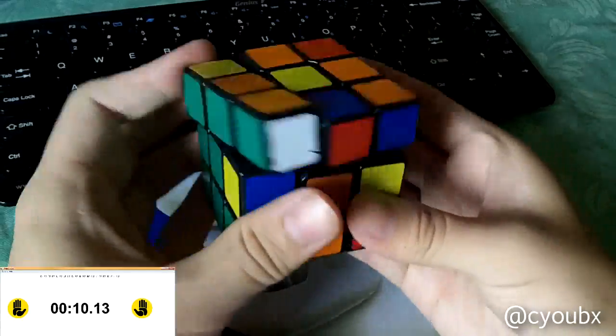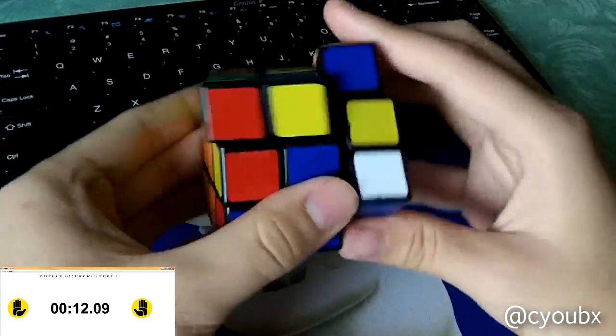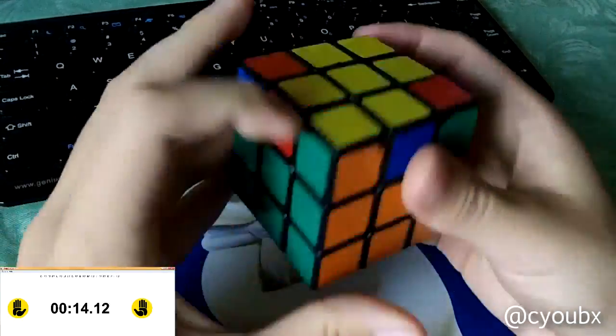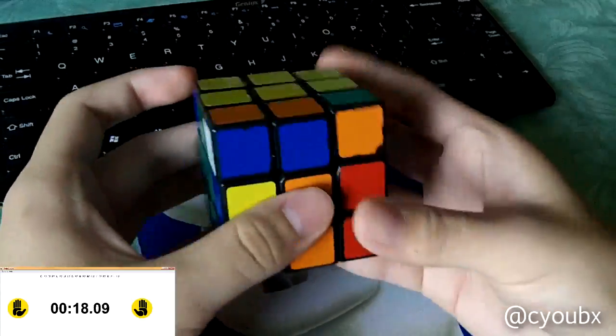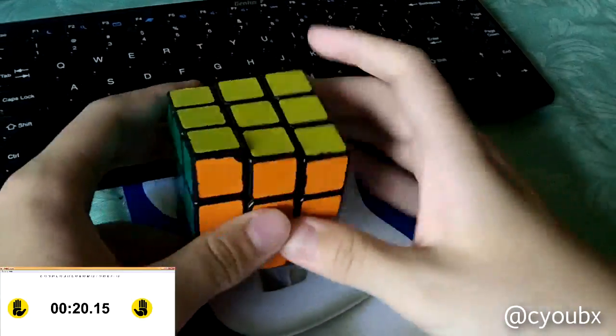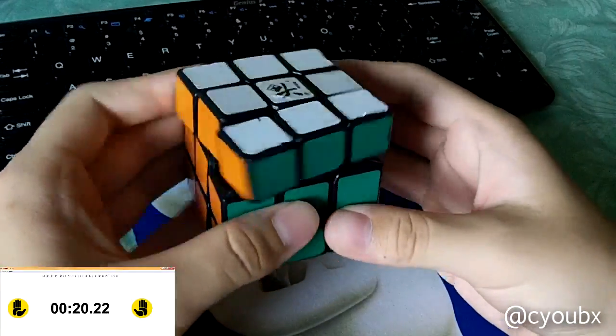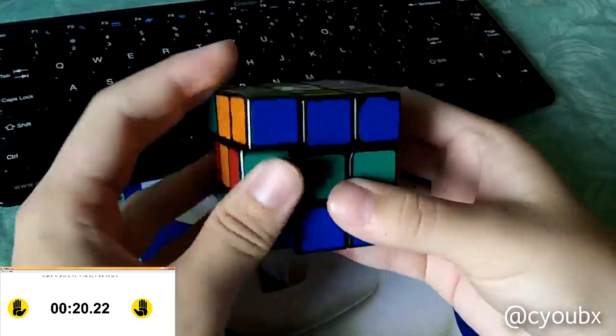You have to trust that it works and really turn slowly. To give you some perspective, given a 60 move CFOP solve, which is somewhat large, you can get 30 seconds with two turns per second. This is very slow turning to get a time that you might be at right now.